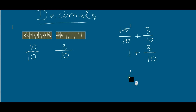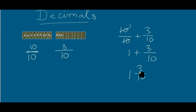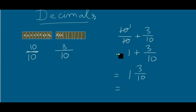This can also be written as one and three over ten. This is the shortcut method — if I want to add this whole part, I can directly remove the plus and put the whole part alongside the fractional part. So the whole part can be written alongside the fractional part in this way.